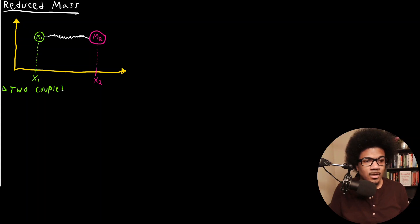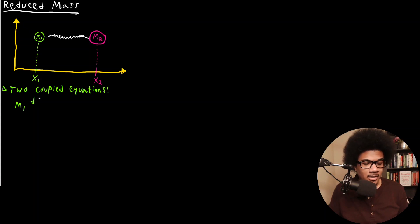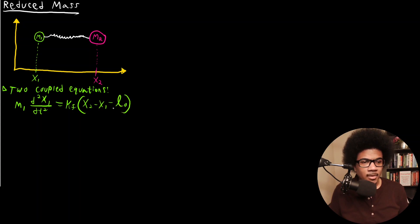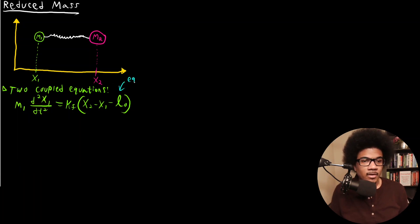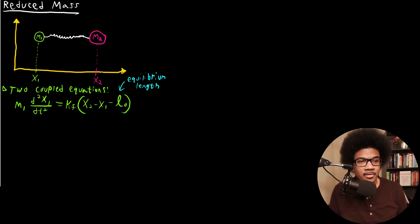So we have two coupled equations. The first one, for mass one: M one times the second derivative of X one with respect to DT is going to be equal to the spring constant K_F times X two minus X one minus the equilibrium length L-naught. So just like we introduced in the last video, it's the current length minus the equilibrium length — where X two minus X one gives your current length of the oscillator, and L-naught is your equilibrium length.